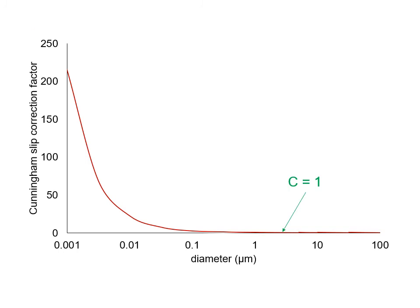And now we'll look at what the value of the Cunningham slip correction factor is. This is in log scale on the x-axis. So you can see that for particles larger than a few microns, the Cunningham slip correction factor is 1. But as you go to smaller and smaller particle sizes, you can see that value at a diameter of 1 micron is equal to 1.16. So the terminal settling velocity is 16% higher than you would expect. And as you go to smaller sizes, that can become tens or even hundreds.